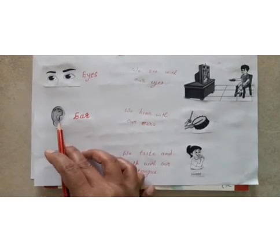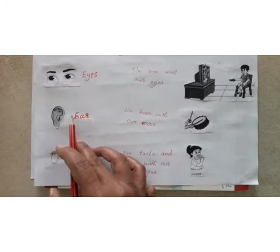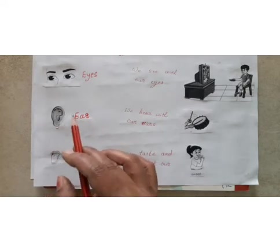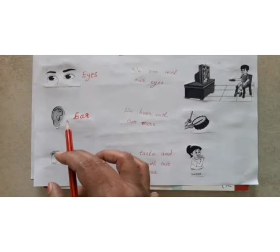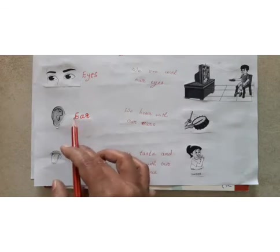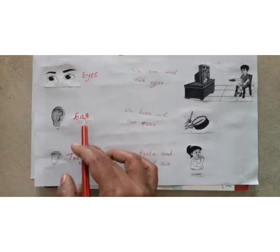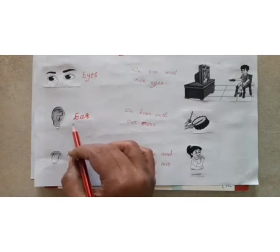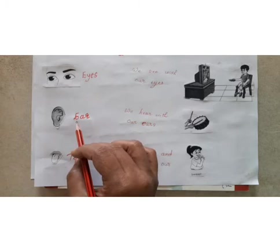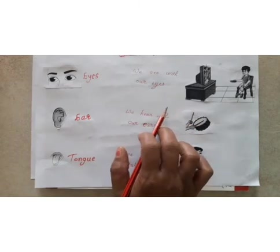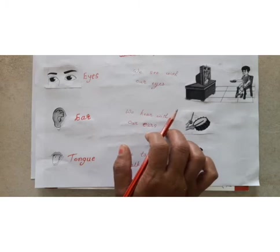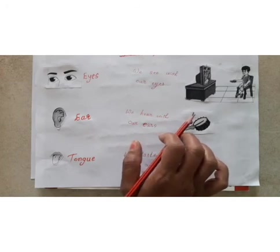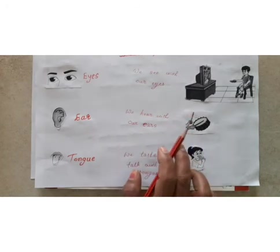I showed here only one ear, but we have two ears. Ears help us to hear sounds — such as the beat of drums, the sound of the alarm clock, the chirping of birds, etc.